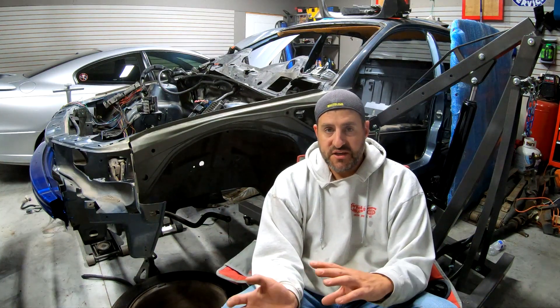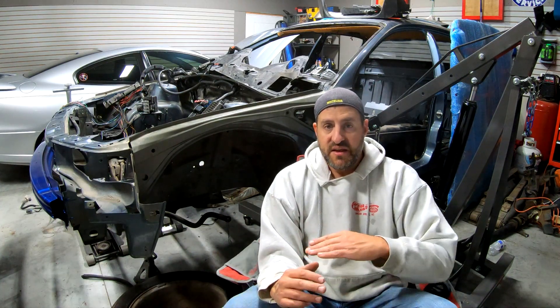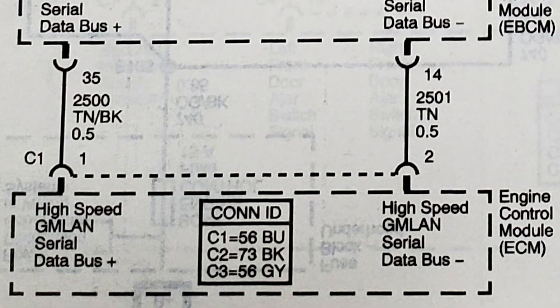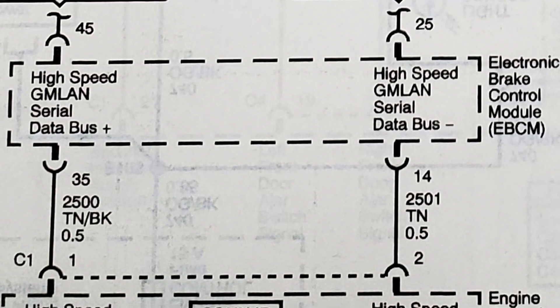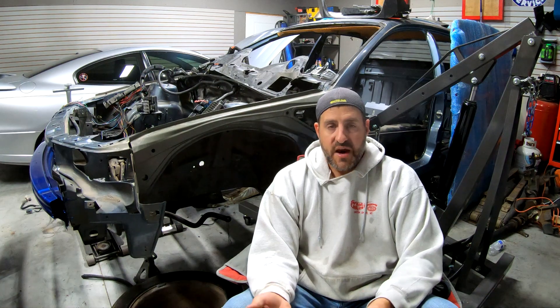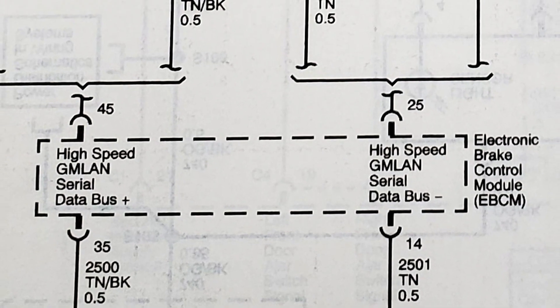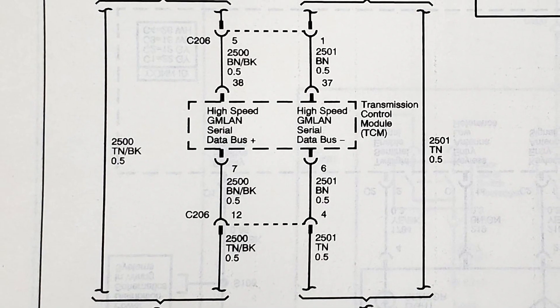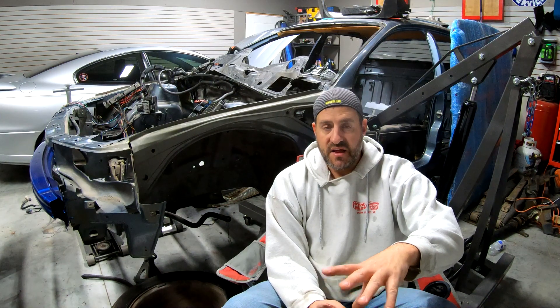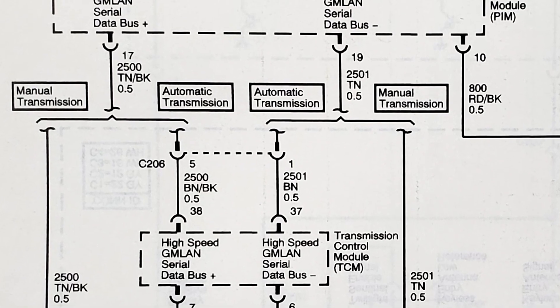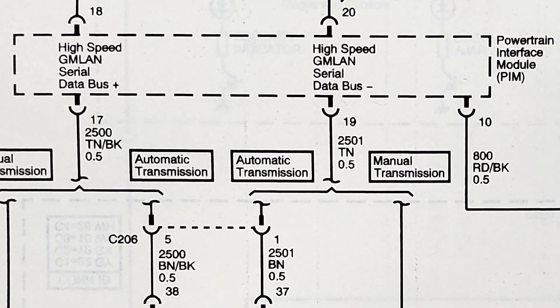I'm actually going to cut here to a screenshot from the service manual that shows the order of this network going through the different modules. Like I said, it starts with the engine computer. Next place it goes is the ABS module, or the electronic brake control module. From there, it goes back into the car, through the dash, and it goes to a connector down by the driver's side kick panel. Now if you have an automatic transmission, its next hop is going to be to the transmission control module, which sits on the footwell right behind that kick panel on the driver's side floorboard. Then it comes back out of the transmission control module, and from there it goes into what's called the powertrain information module — that's its fourth stop.